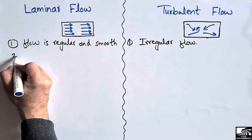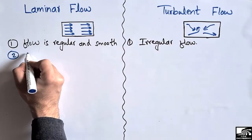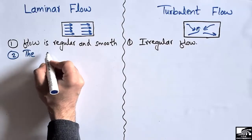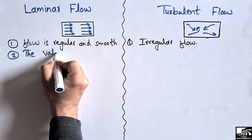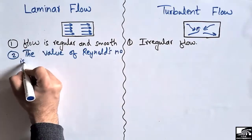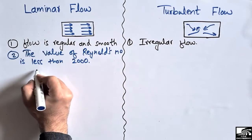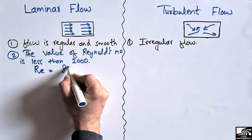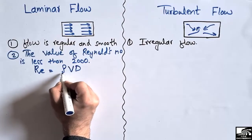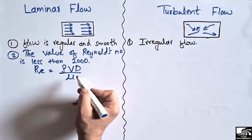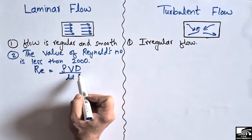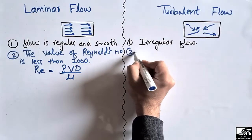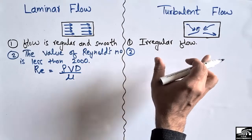The second characteristic is the value of the Reynolds number. For laminar flow, the Reynolds number (Re = ρvd/μ) is less than 2000. For turbulent flow, the Reynolds number value should always be greater than 4000.